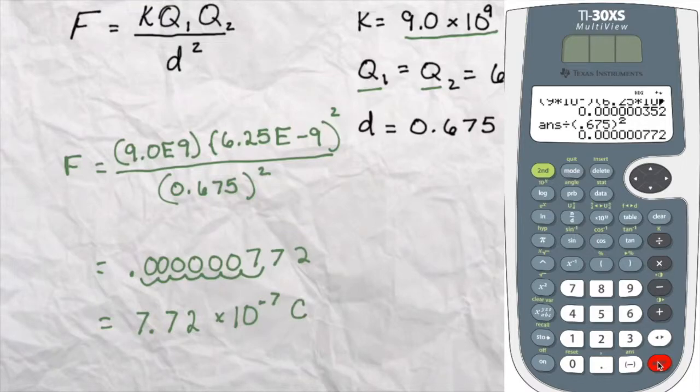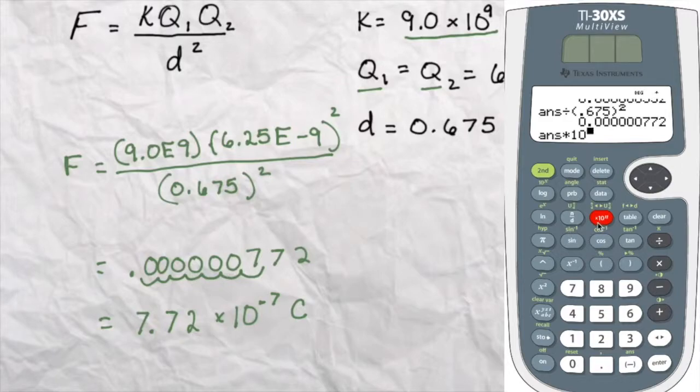And that again is in Coulombs. So it's very similar to what we did on the TI-83s. Except for this times 10 to the n power. It's a little bit more explicit for us on the TI-30XS.